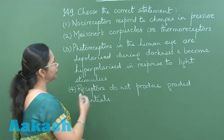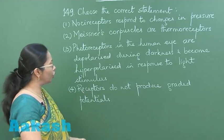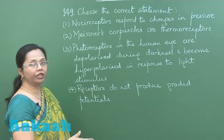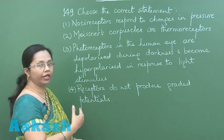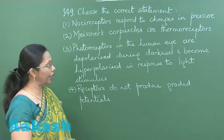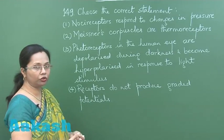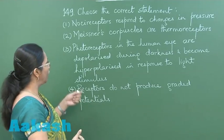The fourth choice states that receptors do not produce graded potentials — that is also wrong, because receptors do produce both graded potentials as well as action potentials.